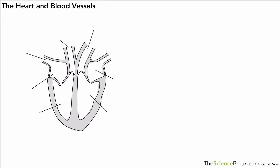Hello, today we're looking at the heart and the blood vessels in the body, but we're going to start off by doing the labels of the heart. There are a few that you need to know and remember. The first thing is you have to remember that as you're looking at the page or screen, the right side is labelled as the left and the left side is labelled as the right for the heart — it's like imagining it's your own heart you're labelling.